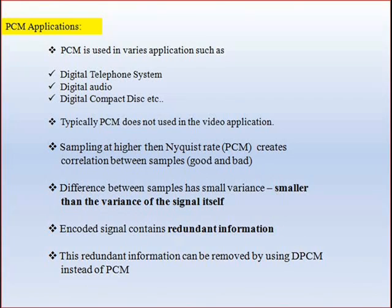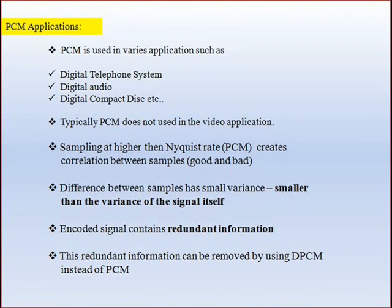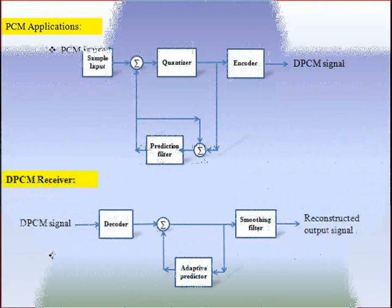This reduces the transmission bandwidth, and PCM systems using differential quantizing schemes are known as differential pulse code modulation, or DPCM. The DPCM transmitter is similar to the PCM transmitter, but it has a prediction filter for prediction of the future values of the signal.